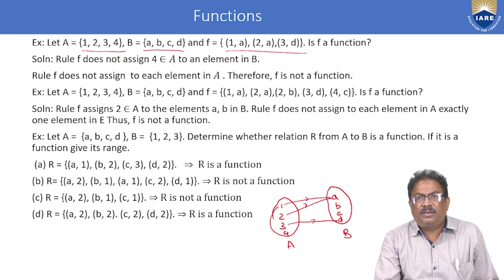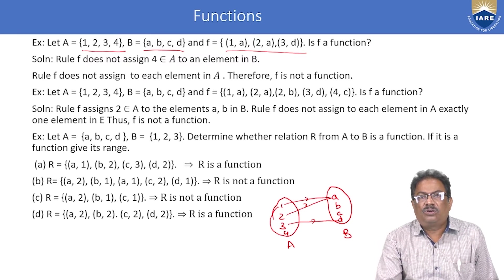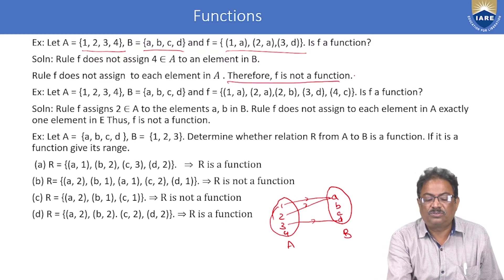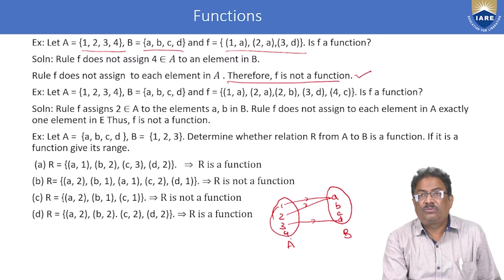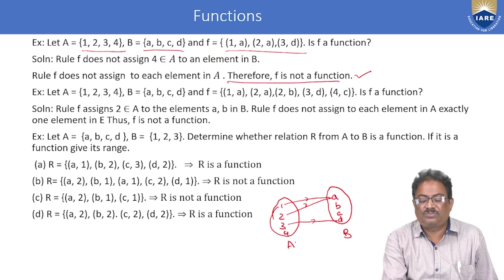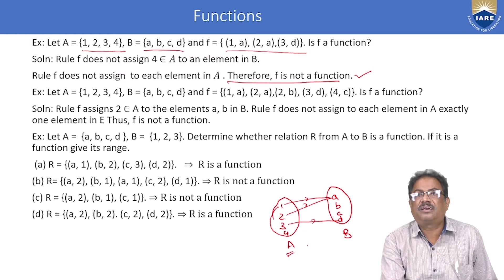Here, 1 has image A and 2 has image A, but 4 does not have any image — f(4) is not defined. So f does not assign an image to each and every element of set A. Therefore, it is simply a relation, not a function.